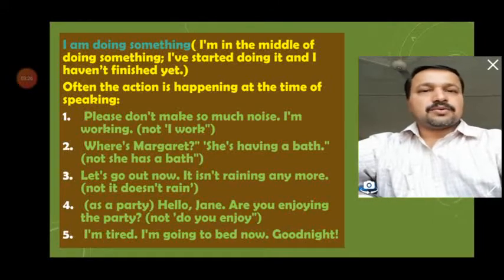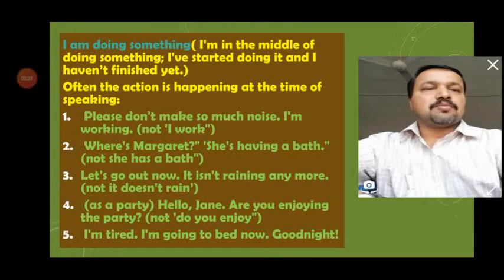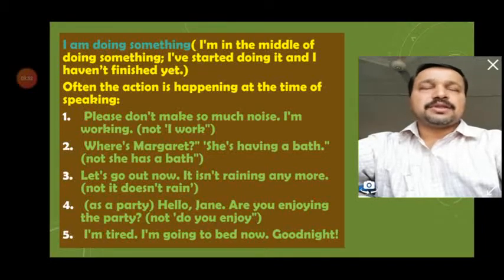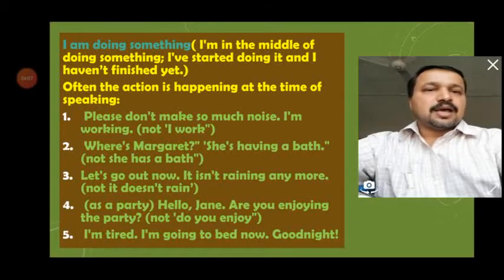At a party: 'Hello Jane, are you enjoying the party?' — you are asking about the present situation. If you ask 'Do you enjoy the party?' that would be simple present, meaning you enjoy parties in general. When someone is already at a party, it is better to ask 'Are you enjoying the party?' — meaning right now, at present. Also: 'I'm tired, I'm going to bed now' — stating a present condition at the time of speaking.